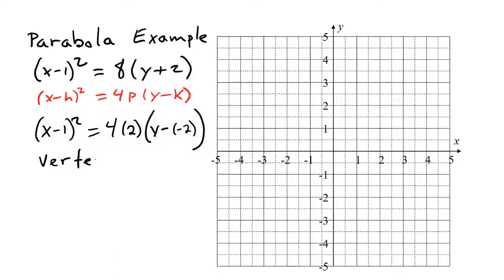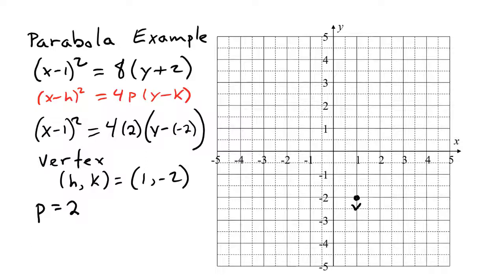This gives us a vertex (h, k) at (1, -2), which we can graph. It also gives us p equals 2, so the focus should be 2 spaces in the positive direction from the vertex. Because the square is on the x, the parabola opens up or down; because p is positive, it opens up. We go 2 spaces up from the vertex to get the focus, and 2 spaces below the vertex for the directrix, making the focus and directrix 4 spaces apart.